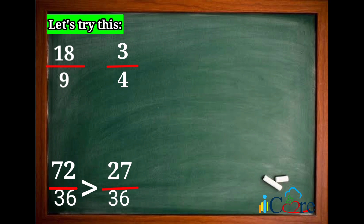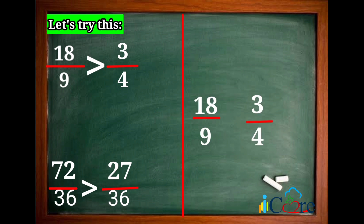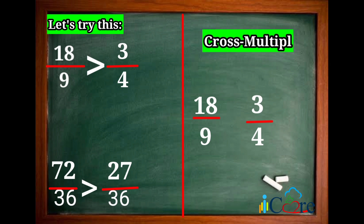The converted fractions are 72 over 36 and 27 over 36. Since 72 over 36 is greater than 27 over 36, thus 18 over 9 is greater than 3 over 4. Now, let's use the other method, which is cross multiplication.